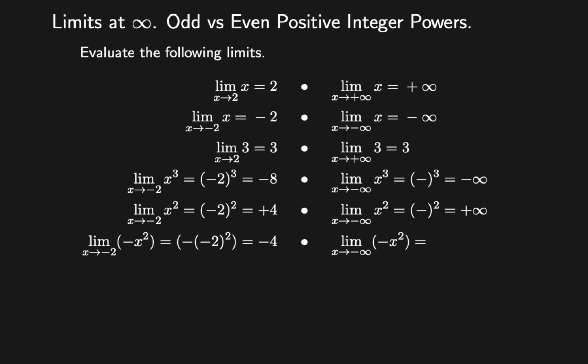Find the limit of minus x squared as x approaches minus infinity. Same goes here — substituting into x squared gives a positive number, then adding the negative sign gives negative infinity.